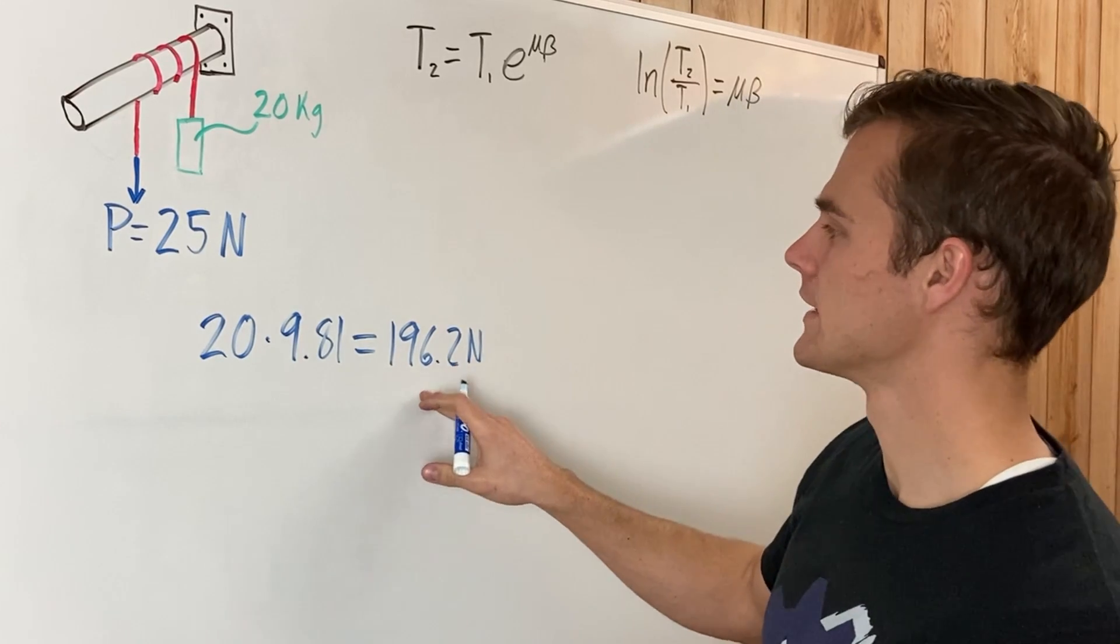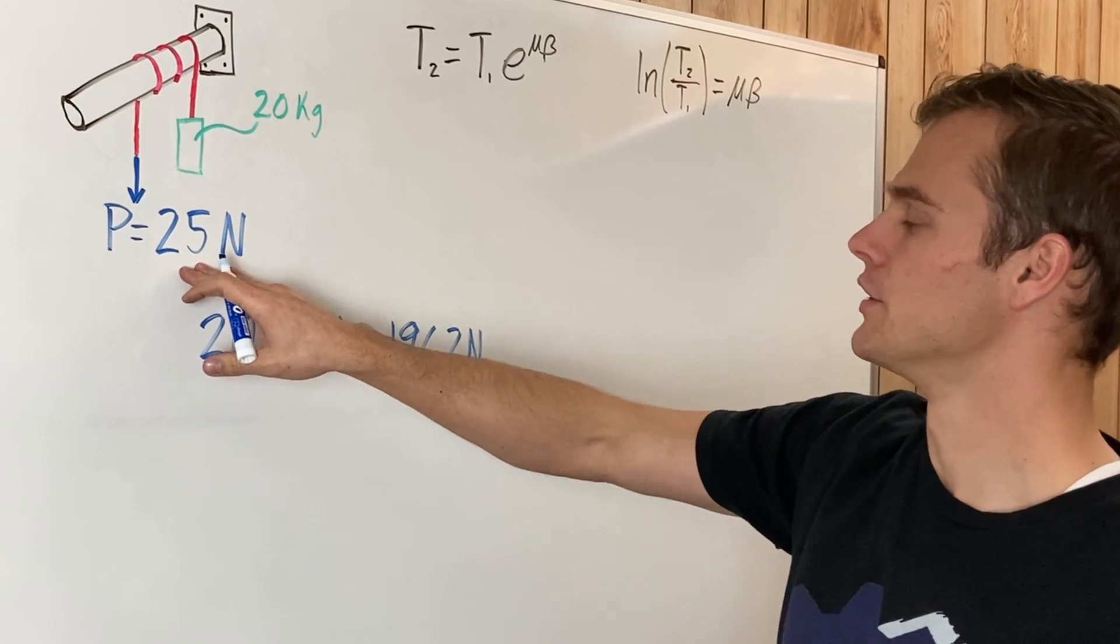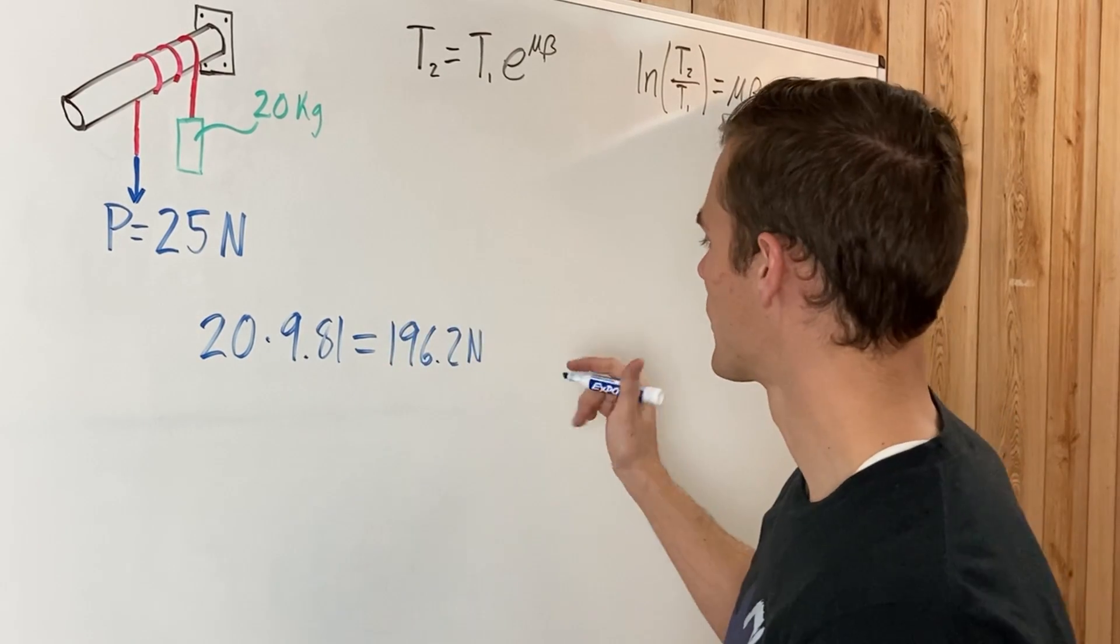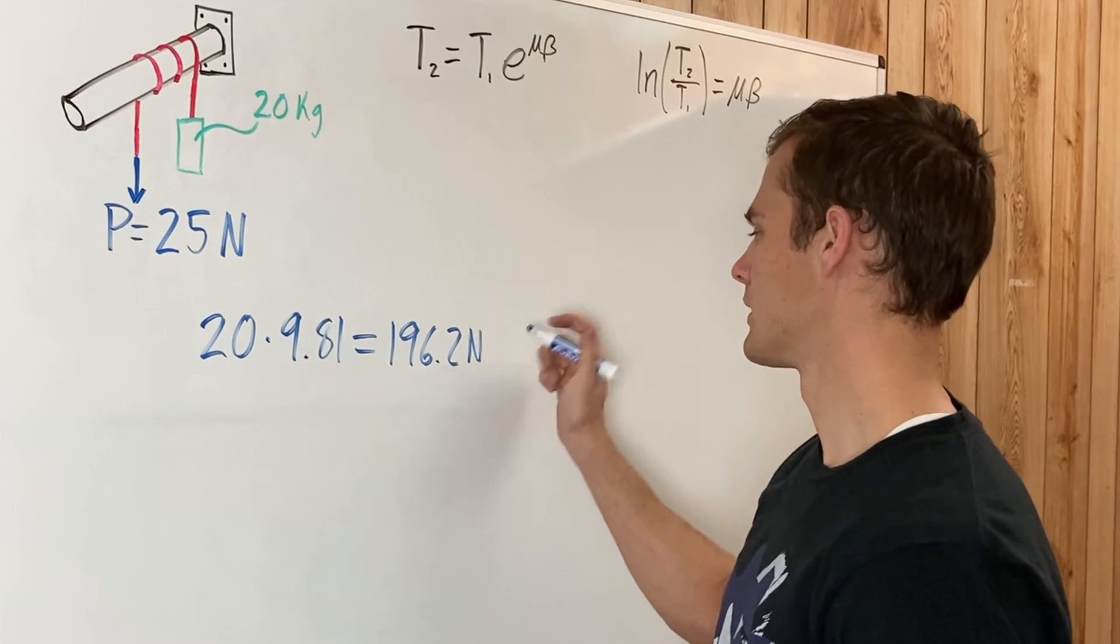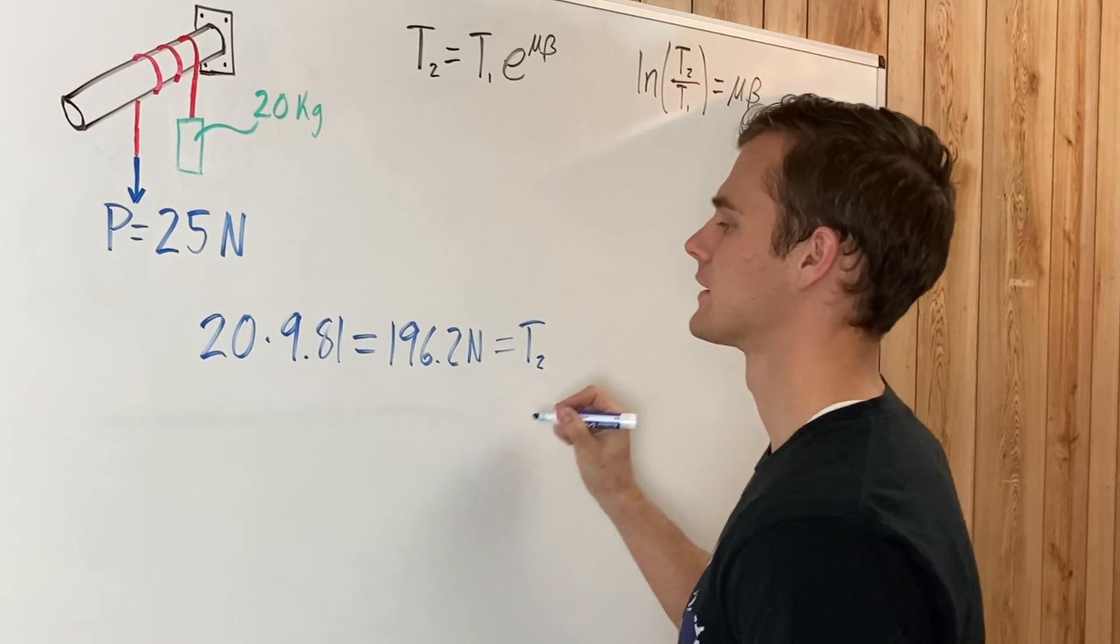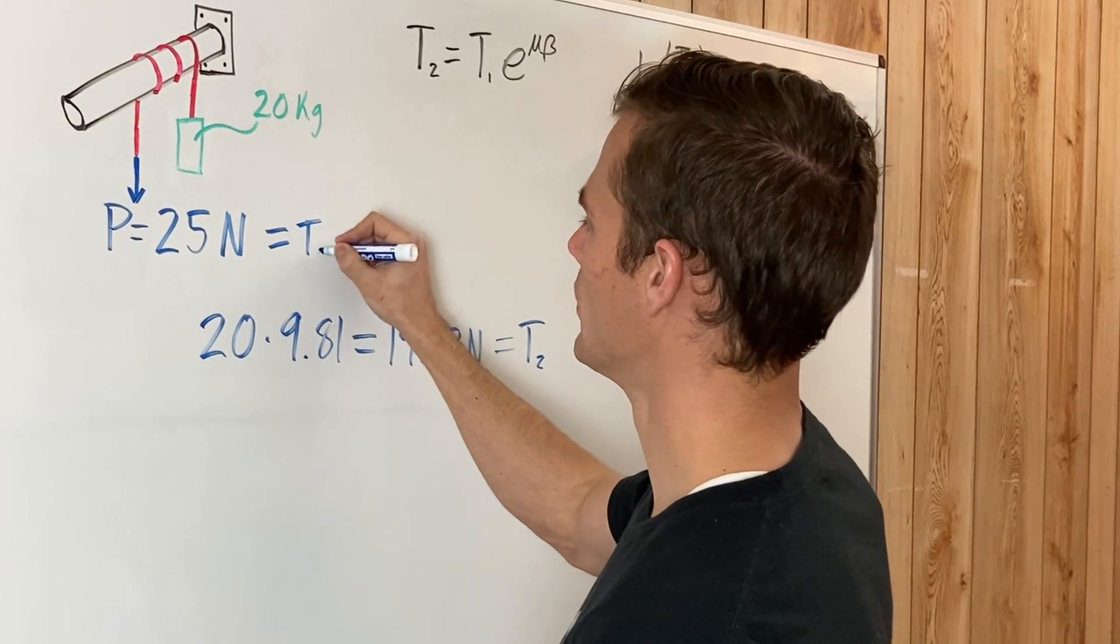So this is bigger than the 25 newtons. And we know that T2 is always bigger than T1. So therefore, this is going to be T2 in this case. And then this is going to be T1.